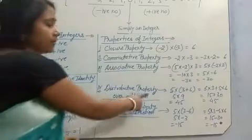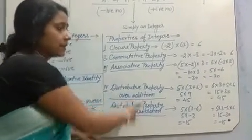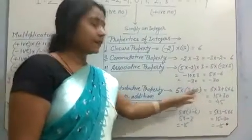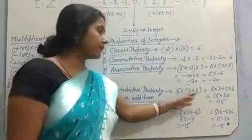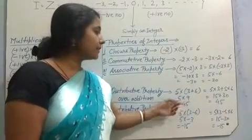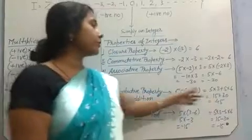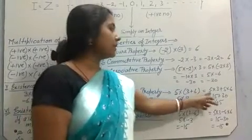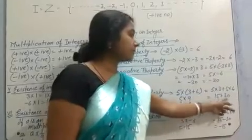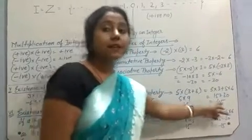The fourth property is the distributive property over addition. If we take three integers 5, 3 and 6, and solve 5 into (3 plus 6), we get 5 into 9, which is 45. After distributing 5 into both integers: 5 into 3 plus 5 into 6 gives 15 plus 30, which is also 45. In both cases the same answer is coming.